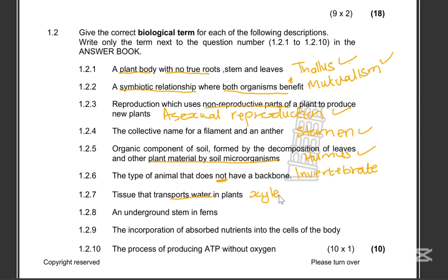That is the xylem tissue. Remember you have the xylem and the phloem — the phloem will transport food. 1.2.8: An underground stem in ferns — that is a rhizome. Rhizome is the underground stem. Please don't confuse it with rhizoid, which are root-like structures.